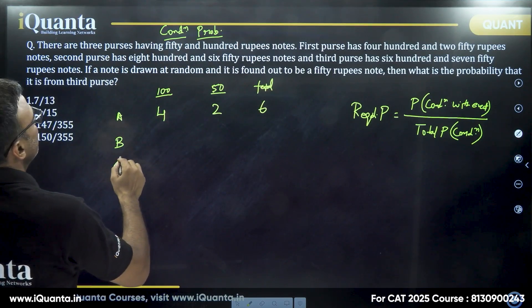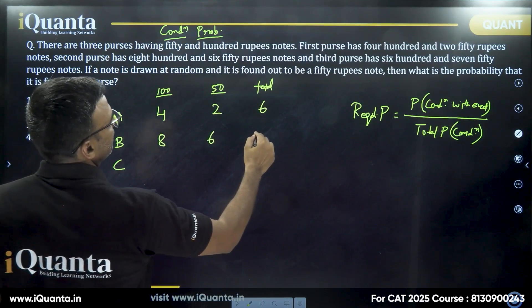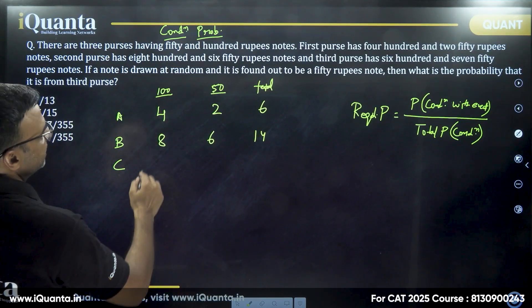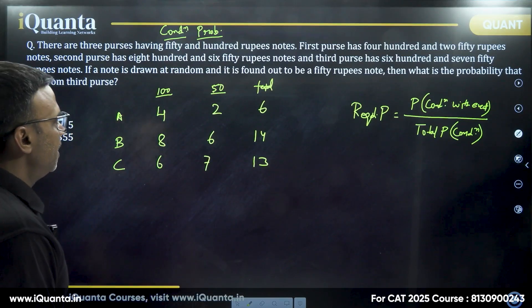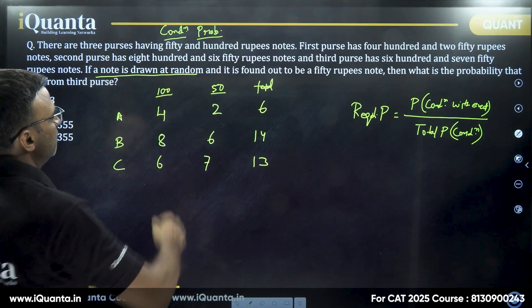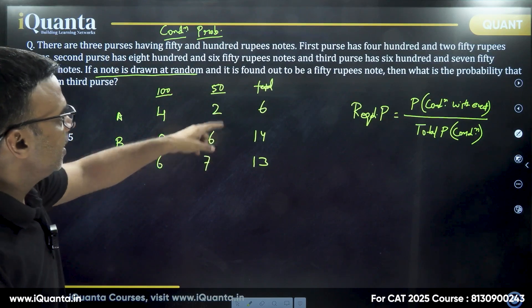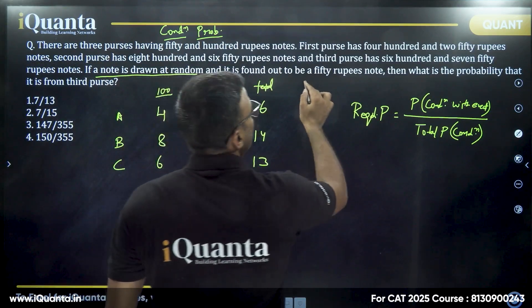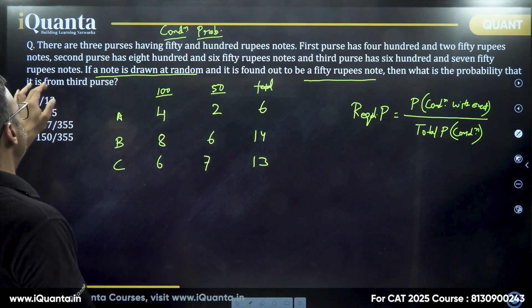Then B has eight 100 and six 50 rupee notes, so total 14. And the third one has six 100 and seven 50, so 13. It says if a note is drawn at random, so a note can be drawn from any of the purse, and then within the purse the probability of 50 rupees will be different, and it is found out to be a 50 rupee note. For this question, what is the probability that it is from third purse?